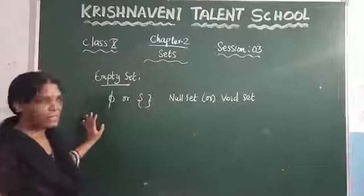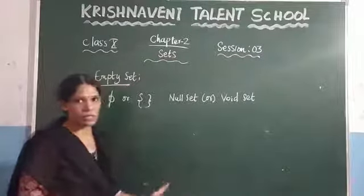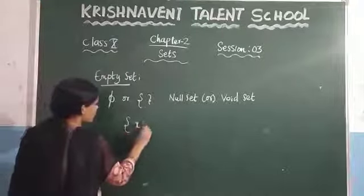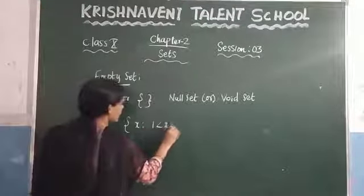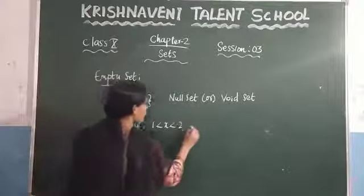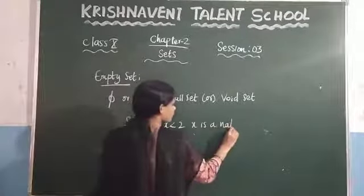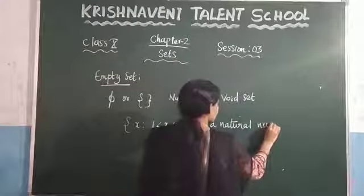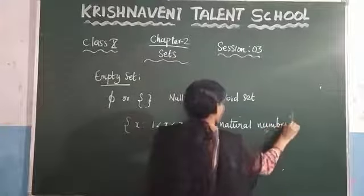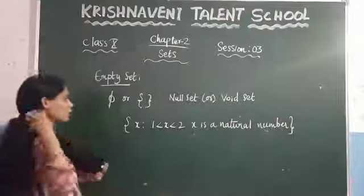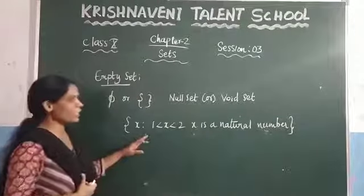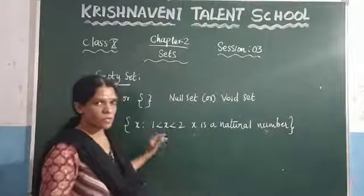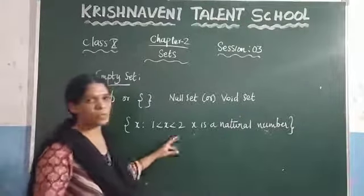The set that does not contain any elements we call it as an empty set. Let us consider an example: the set of x such that 1 less than x less than 2, where x is a natural number. If you consider this set and want to write it in roster form, you have to write what elements are present in this set.